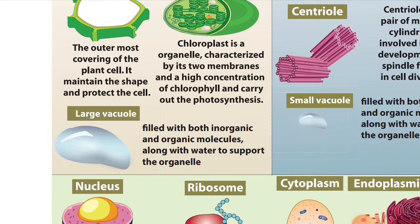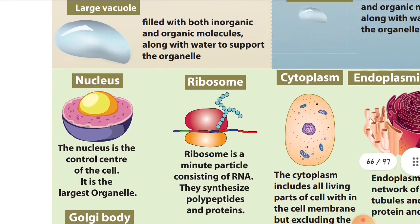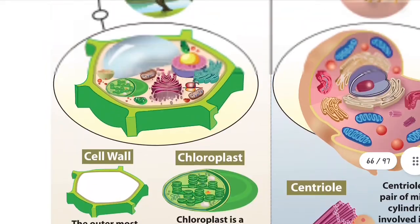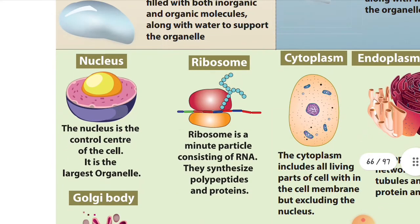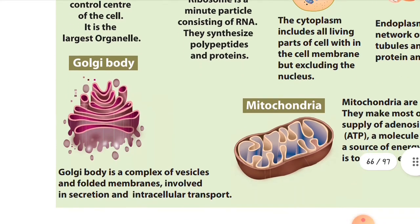The plant cell also has a large vacuole filled with both inorganic and organic molecules along with water to support the organelles. The nucleus is the control center of the cell and the largest organelle. Ribosomes are minute particles consisting of RNA — ribonucleic acid — that synthesize polypeptides and proteins. Golgi bodies are a complex of vessels with folded membranes involved in secretion and intracellular transport.